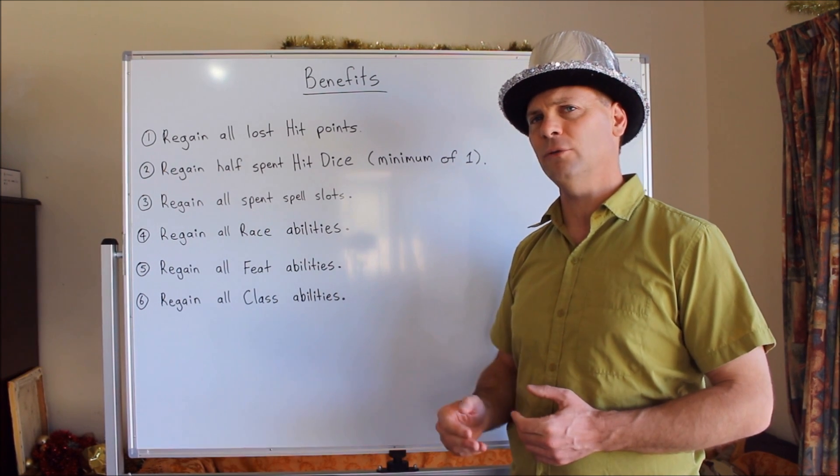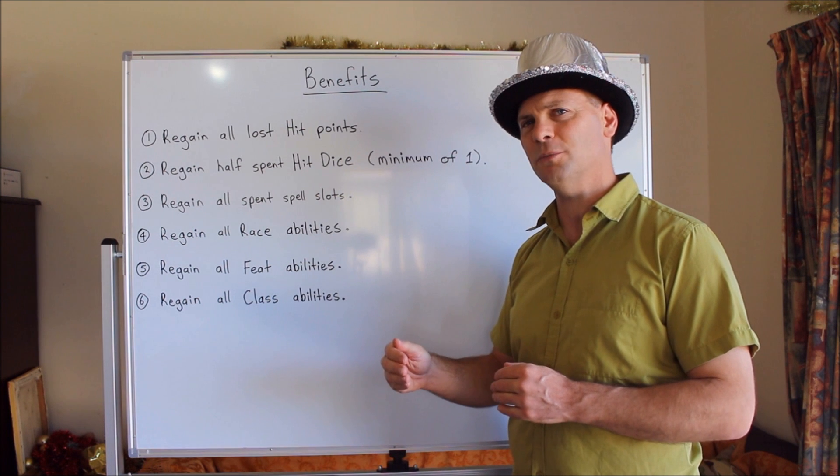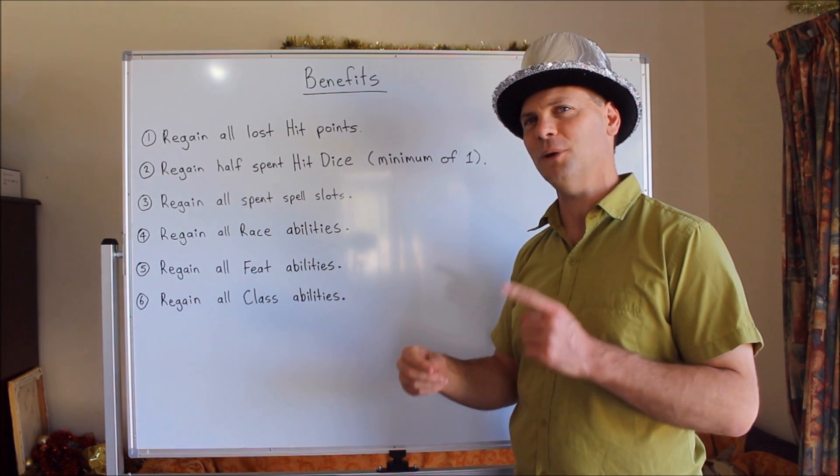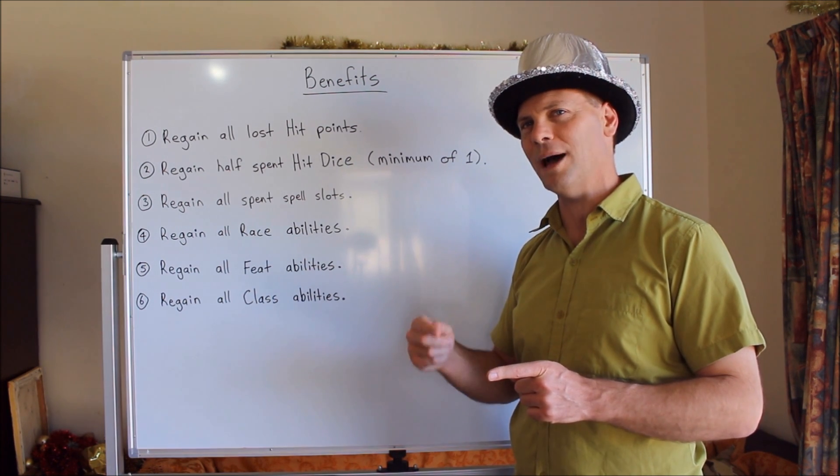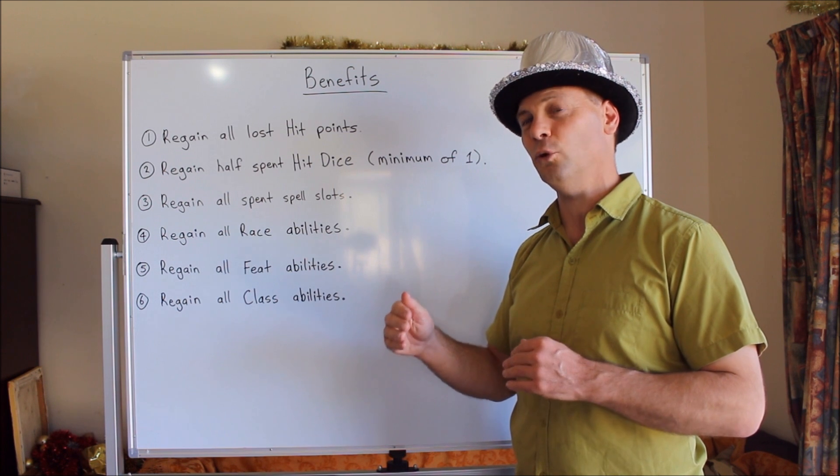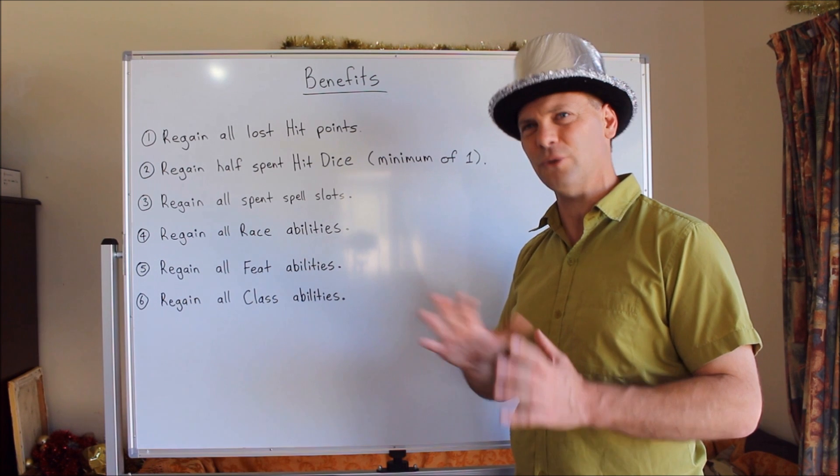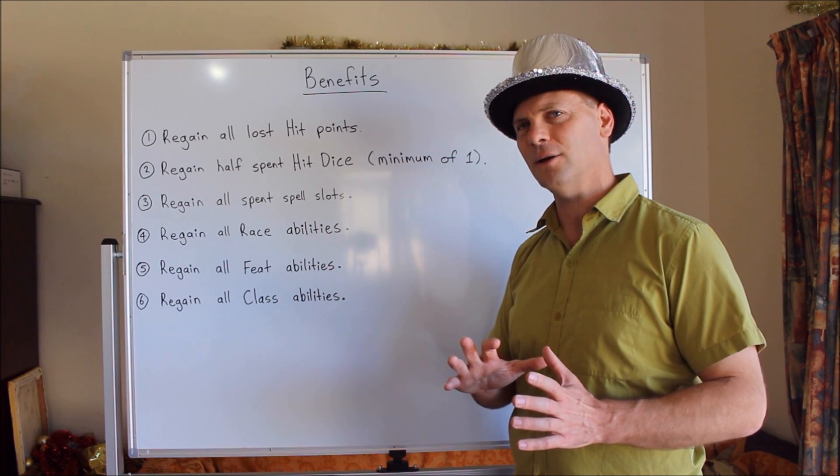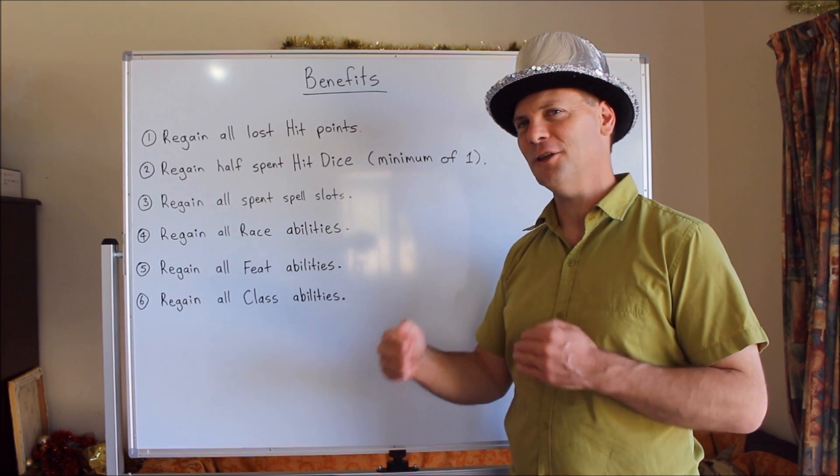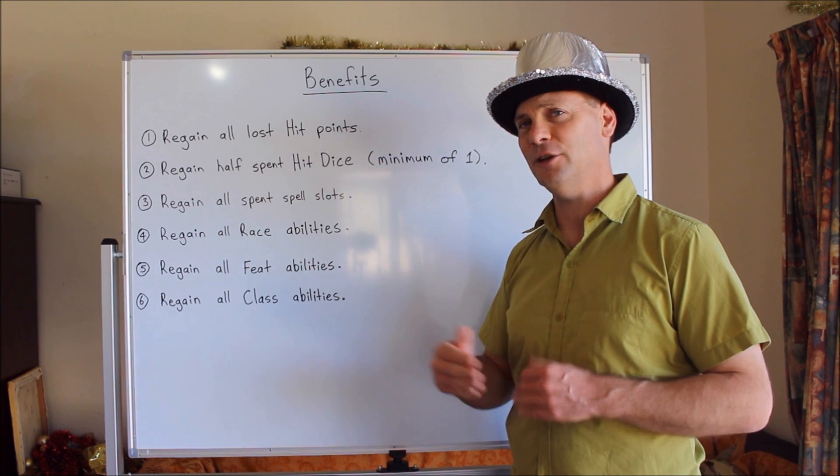If you are an odd level say level three that means you're rounding down the number of hit dice you get back. Which means you can only get one hit dice back. Which means the following day if you spend one hit dice and you only get half back you only get one. Which means it equates to basically the even levels work out fine. The odd levels work out a bit weird because you wind up with it taking three days to get back all of your hit dice. I suggest you talk to your dungeon master about how to sort out the odd numbers if you're only getting half of your hit dice back and you're an odd level.